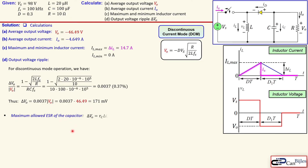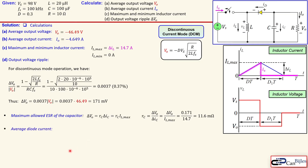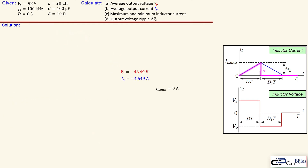The maximum allowed ESR of the capacitor is calculated using an approximation formula where the small letter rc is the equivalent series resistance. Since the peak-to-peak capacitor current equals the maximum inductor current, we rearrange the formula. With IL_max of 14.7 amps and our calculated delta Vo, this gives approximately 11.6 milli-ohms — the maximum allowed ESR when choosing the capacitor. The average diode current equals the negative of the average output current, since there is no average capacitor current.